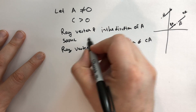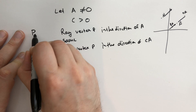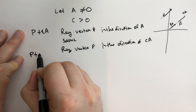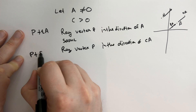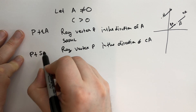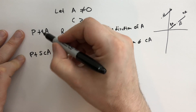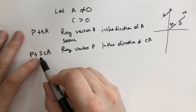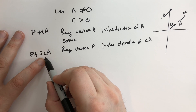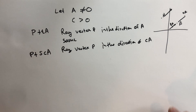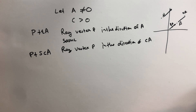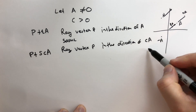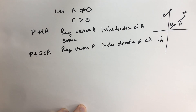Mathematically, the first ray is P plus tA, and the second is P plus S times CA. As long as S is greater than or equal to zero and C is greater than zero, this is going to be the same ray. Notice that if we took a negative number — so negative A — that would be a completely different direction, and the ray would be going in the opposite direction.